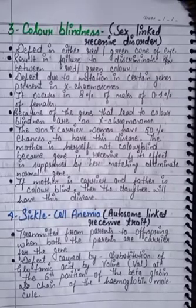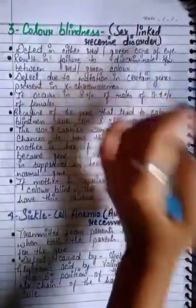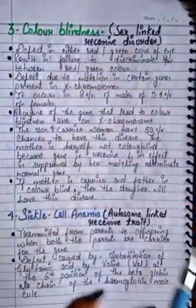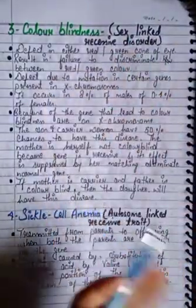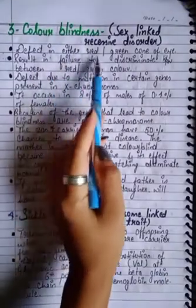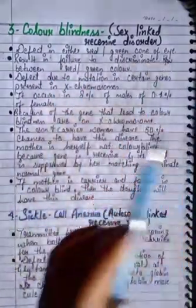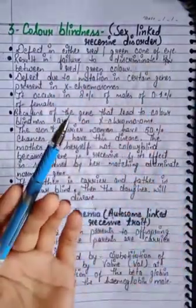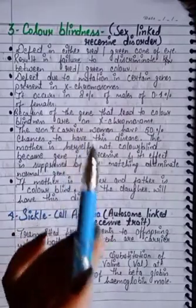The third disorder is colorblindness. It is a sex-linked recessive disorder, also related to the sex chromosomes. The defect is in either the red or green cone of the eye.